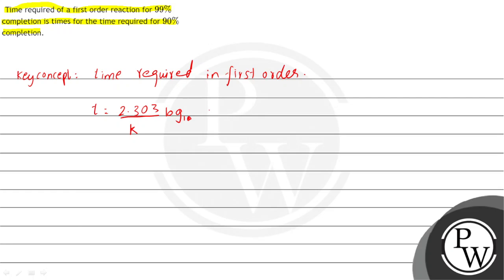Log to the base 10 initial concentration upon concentration left after time t. Okay, so now we have time required for 99% completion and the second time required for 90% completion, and we have to relate how many times they will be related.